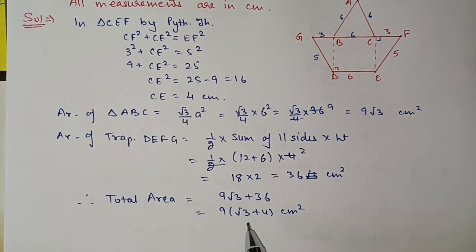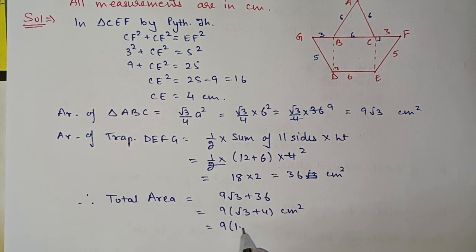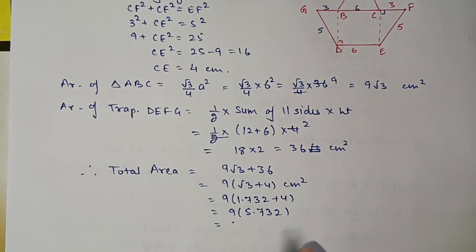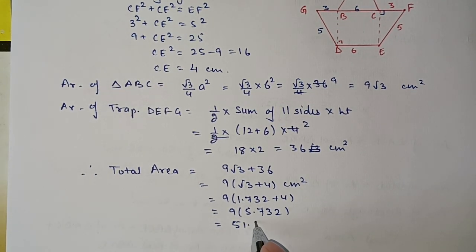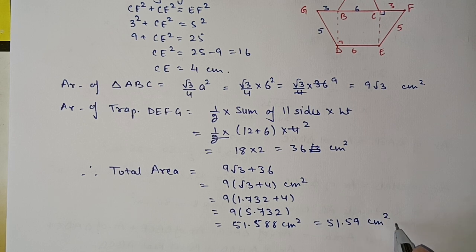If the answer is required in decimal, substitute √3 = 1.732: 9 × 1.732 = 15.588, so total area = 15.588 + 36 ≈ 51.59 centimeter square.